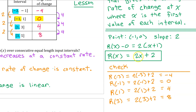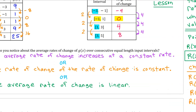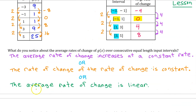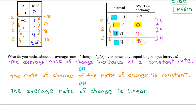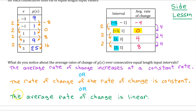This is what we mean when we say that the average rate of change is linear — there is a linear function that gives you the average rate of change for every x value, where x is the first value of the interval. We've talked about three ways to describe how a quadratic function behaves over consecutive equal length input value intervals. You need to know all three, because all of these will show up on free response and multiple-choice questions.